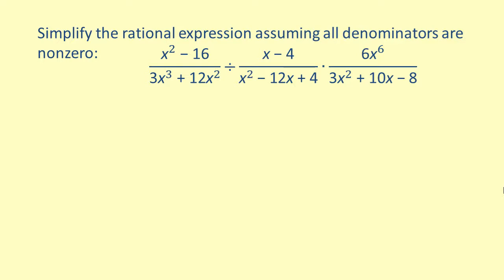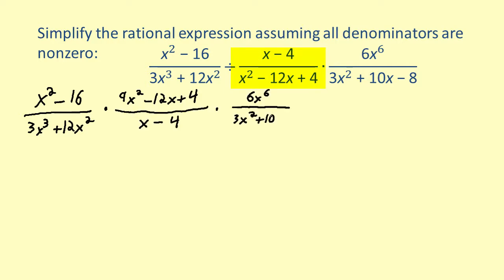Before we start the factoring process, flip the second term and change the operation from division to multiplication. This can be done because dividing by a fraction is the same as multiplying by the reciprocal of that fraction.